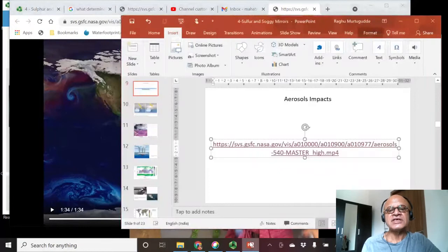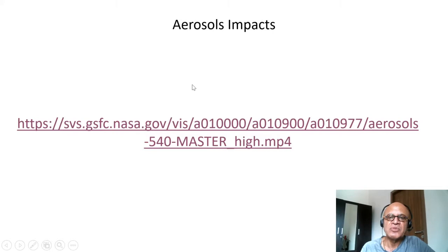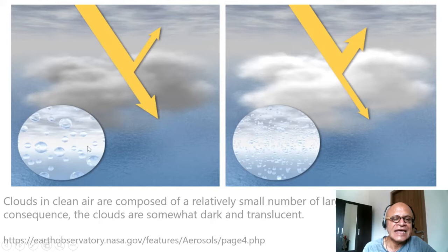This is the idea of using those to make intended manipulation of cloud properties. Here's an example. This is clouds in clean air, composed of larger droplets but smaller in number, and they tend to be darker as a consequence. They reflect and scatter less sunlight.